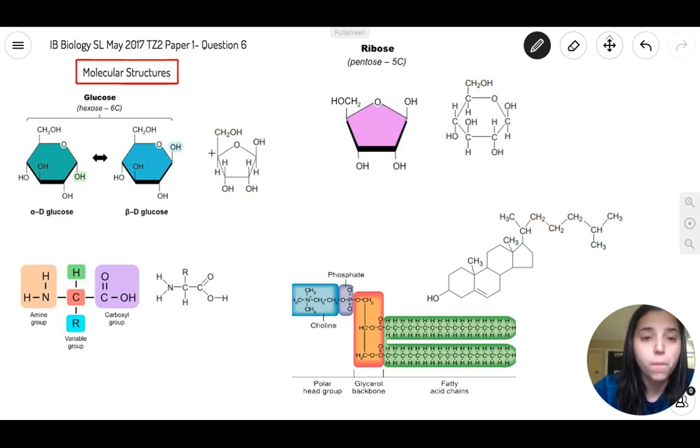Now we compare this to these structures right here next to each other. We have this structure right here which is made of one, two, three, four, five, six carbons and you can see that the oxygen is on the corner just like this one.